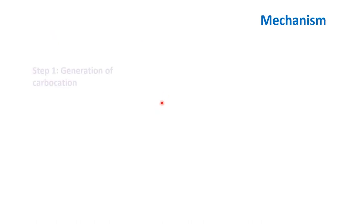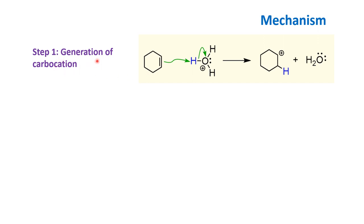Next we will see the mechanism of this particular reaction. The first step is the generation of the carbocation. The carbocation forms through the reaction of the alkene with the hydronium ion. The dilute acid used as the catalyst has water in it, which generates the hydronium ion, and this hydronium ion is reacted upon by the alkene. The alkene attacks the hydrogen atom of the hydronium ion and the hydrogen gets attached. This is an electrophilic addition reaction — an electrophile is being added to the double bond — and in this first step the carbocation is formed.